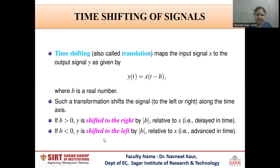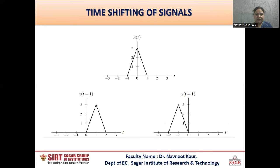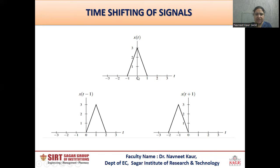Similarly, if b is less than 0, then y is shifted to the left by magnitude b relative to x and is called a time advanced signal. We can see time shifting with the help of an example. Say I have some original signal x(t) which is shown in triangular form, centered at t = 0. Now, if I want to obtain another signal x(t - 1), that means I want to delay this signal x(t) by 1 unit. Delay means I will shift this signal towards the right along the time axis by 1 unit, because the value of b is 1. So this signal, which was initially centered at t = 0, will now be centered at t = 1.